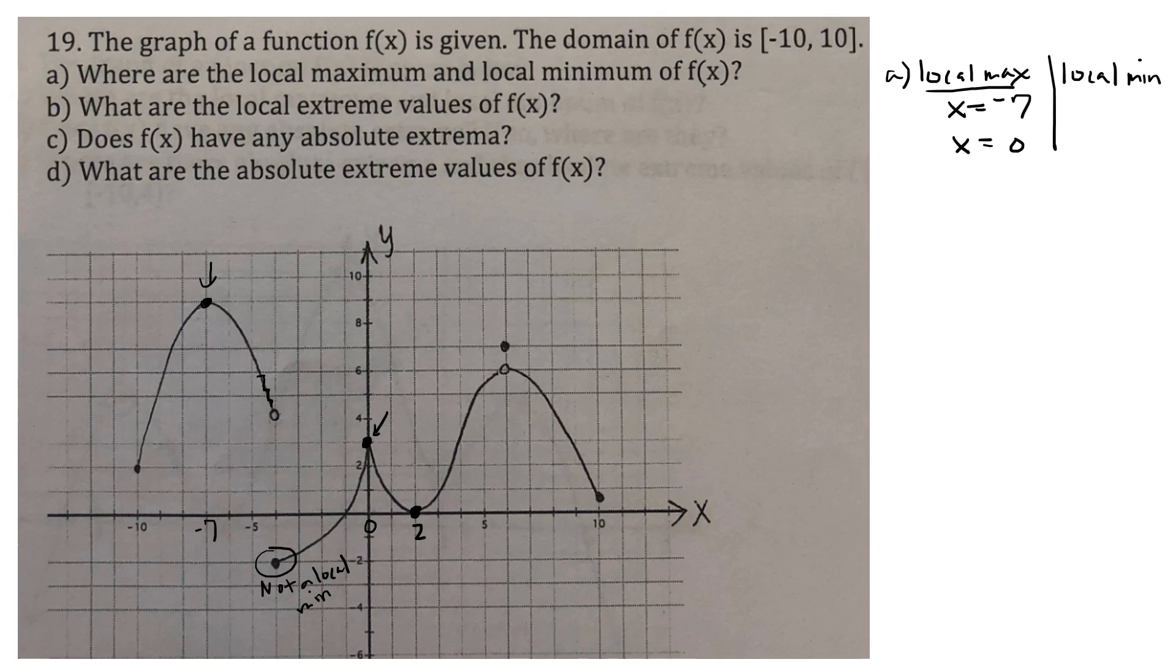Also, I want to make a note that local min cannot occur at the endpoint. You see, once again, you've got to check both the left and the right. And there's nothing to check on this left hand side, there's nothing to check on this right hand side. And so we can't call these guys local minimums. So basically, local maxes and local mins cannot occur at the end point. That is the end of question A.